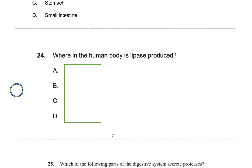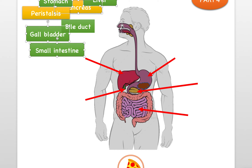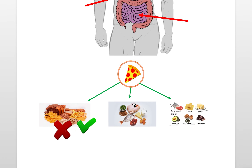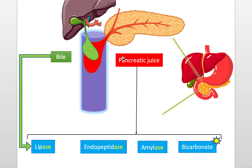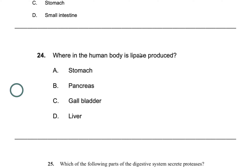Next question: where in the human body is lipase produced? Bear in mind that fats are not digested until we reach the small intestine. No fats are broken down in the mouth, and no fats are broken down in the stomach. When the pancreas releases lipase into the small intestine, that is where fats are broken down. The pancreas releases pancreatic juice containing lipase into the small intestine, and when the food arrives, the lipids are broken down by this lipase enzyme.